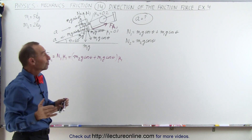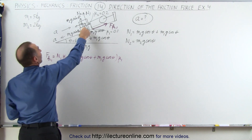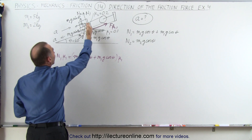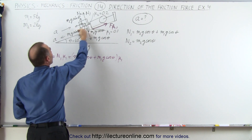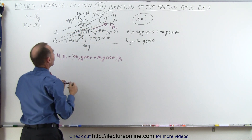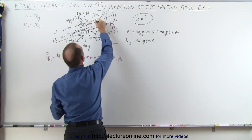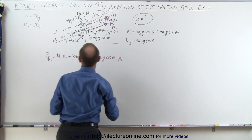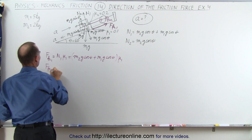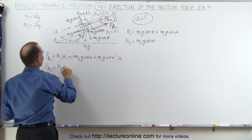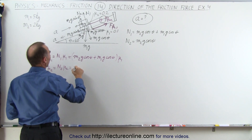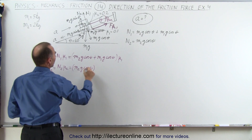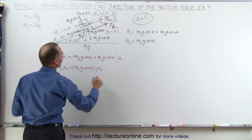How about the second friction force? On m1, this is the force between the two blocks, and the direction of that force will be opposite to the motion of m1 if the friction force wasn't there — meaning there's a second friction force in this direction called force friction two. Force friction two is going to be N2 times mu2, which is equal to m2g times cosine of theta multiplied times mu sub 2.